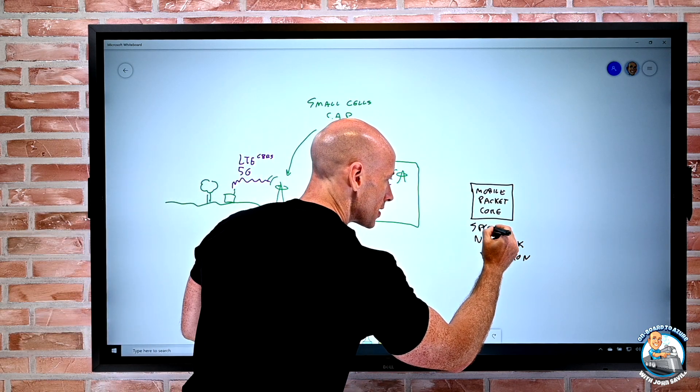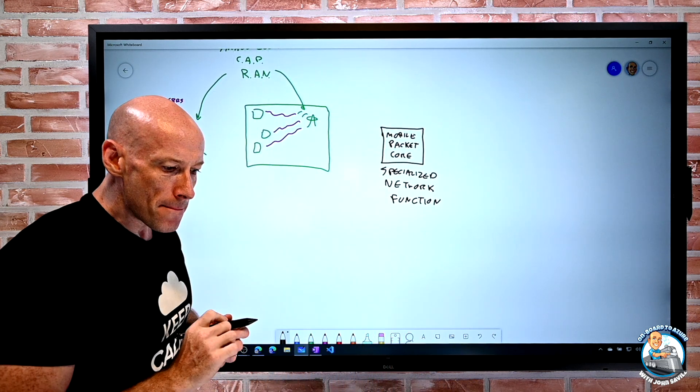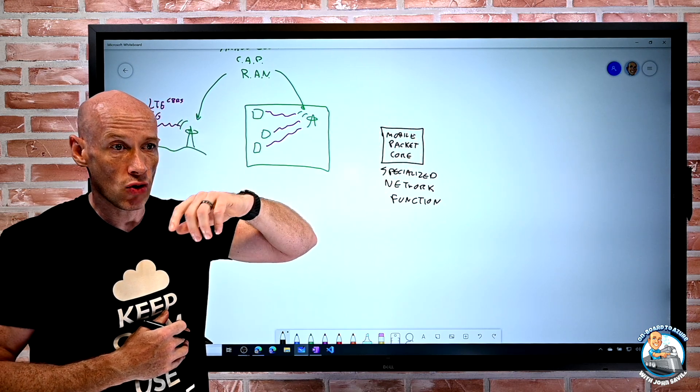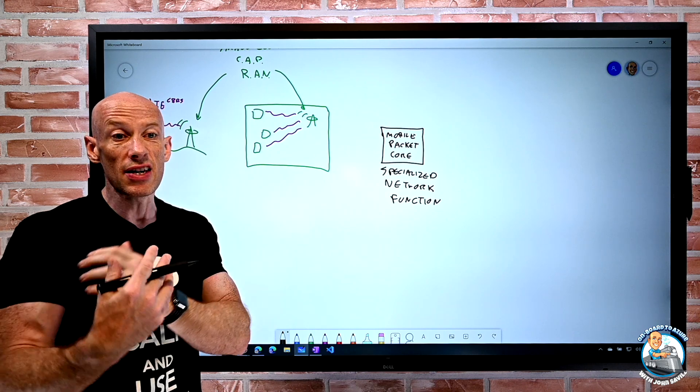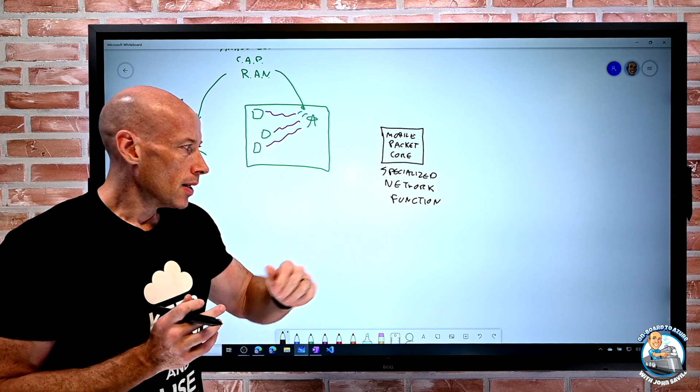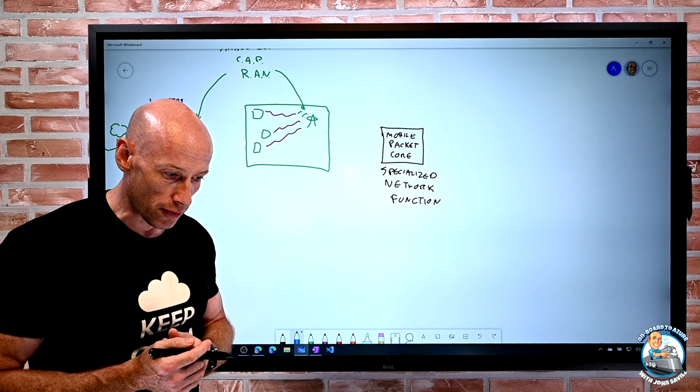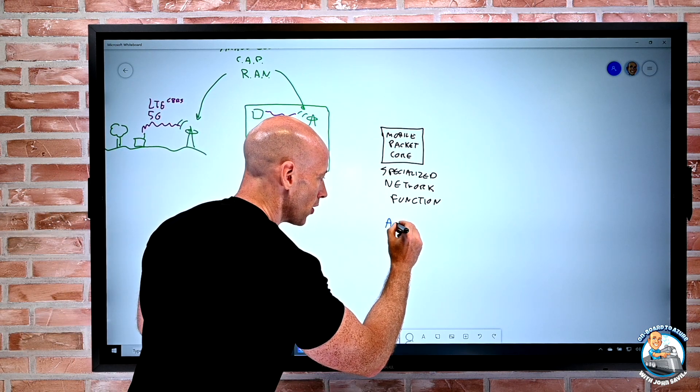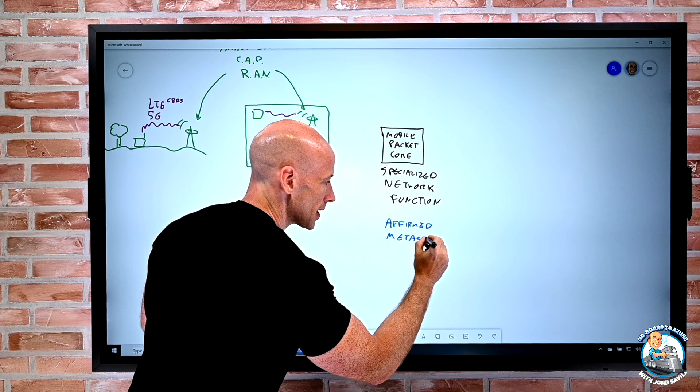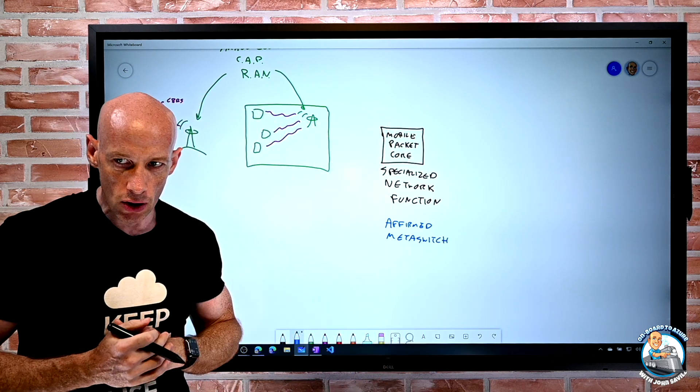Now this is a specialized network function and there are many different ones available. Now there are more than just packet cores. I might have requirements for SD WANs. I might have requirements for VPNs or firewalls. This is a different type of network function. Now there are different options available here. There are first party ones from Microsoft. You can think about things like Affirmed. You might hear MetaSwitch.